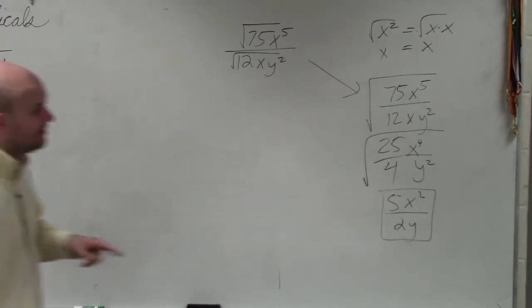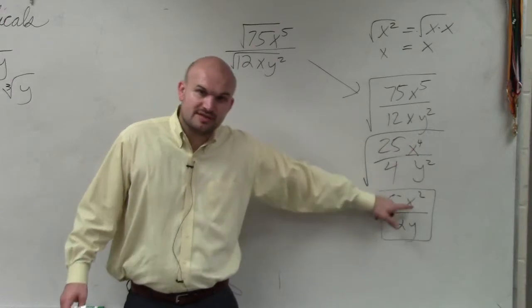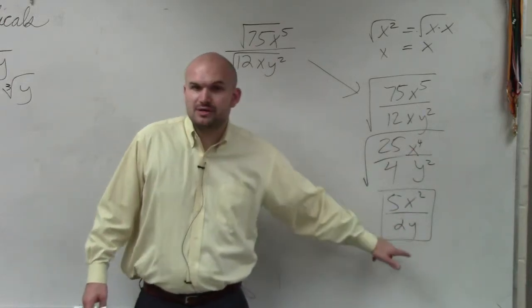You're right, so you just leave it like that. But the square root of 25 is 5. The square root of x to the fourth is x squared. The square root of 4 is 2. The square root of y squared is y.